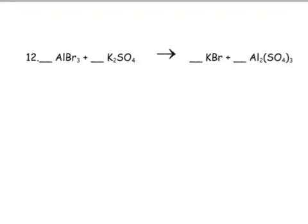Okay. Atom inventory. Let's take a look. Let's see, on this side we have one aluminum, we have three bromines, there are two potassiums, one sulfur, and four oxygens.